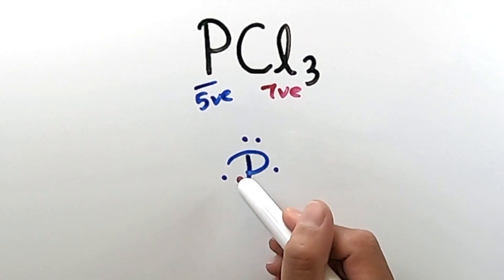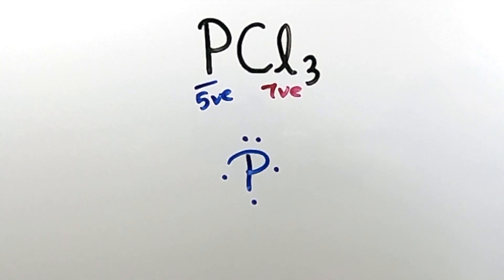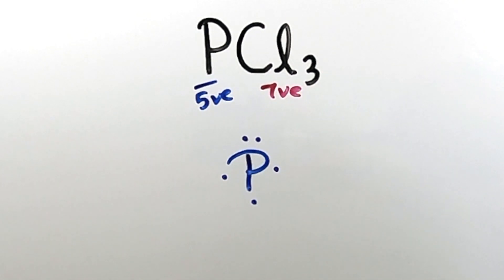It's the singular electrons that are most likely to be used in forming bonds with the other atoms in the compound.